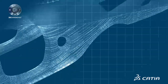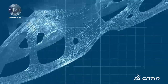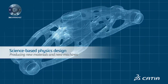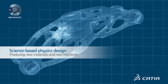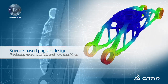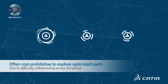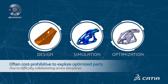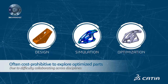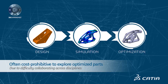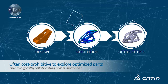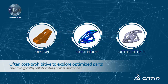Because of this, the design world is rapidly changing and so are the processes involved. Science-based physics design is producing new materials and new machines to make the once impossible or difficult using conventional approaches possible. However, it's often cost prohibitive to explore these optimized parts due to the difficulty of collaborating across disciplines and using all the different systems and tools that are required. This individual silo approach can cause huge delays and errors in data translation.